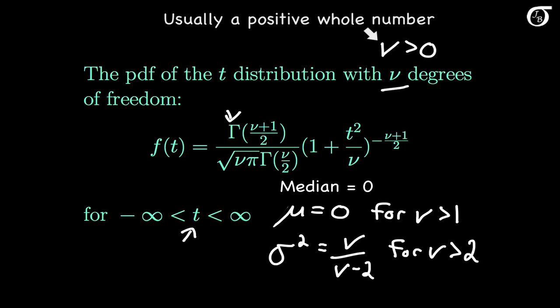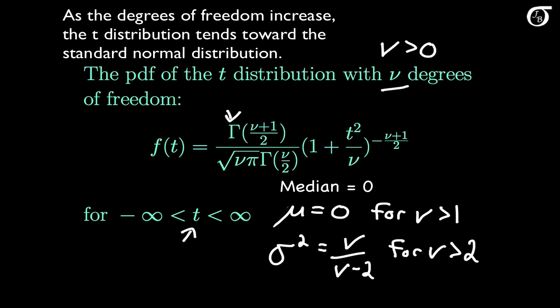A very important notion is that as the degrees of freedom increase, the t-distribution tends toward the standard normal distribution. Let's plot the PDF and see what it looks like.